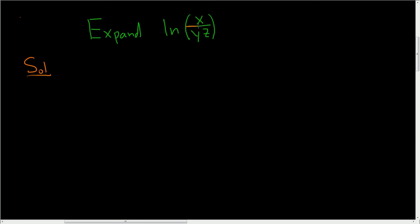We have a quotient here, so we'll use the quotient rule. So this will be the natural log of x minus the natural log of yz.